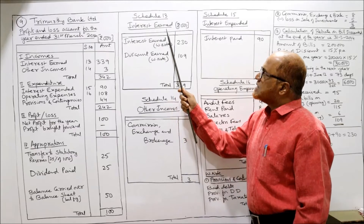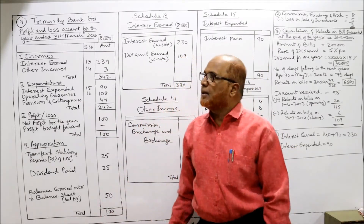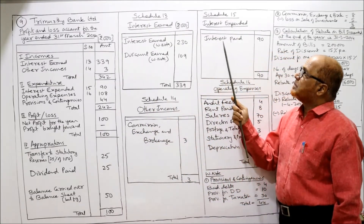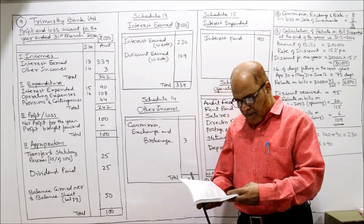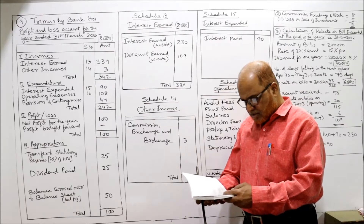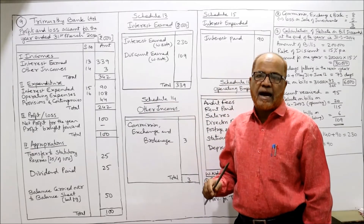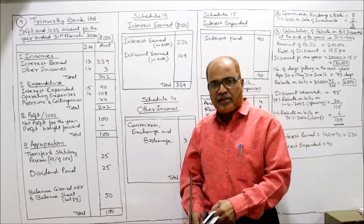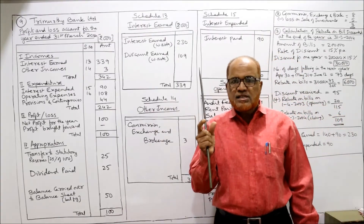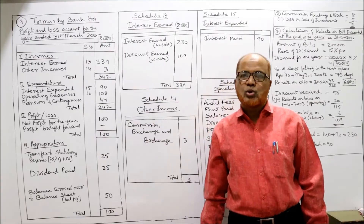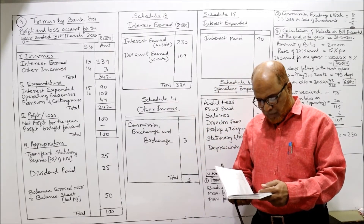Interest earned will be 230 as shown in the working note. Interest expended — interest paid 90. So 230 in schedule 13 and 90 in schedule 15. Second item: rebate on bills discounted. The opening rebate as on 1st April 2003 — for whatever discount received, add opening rebate and subtract closing rebate. Audit fees and rent paid will come under schedule 16 operating expenses. For discount received, in the working note: discount received plus opening rebate minus closing rebate.